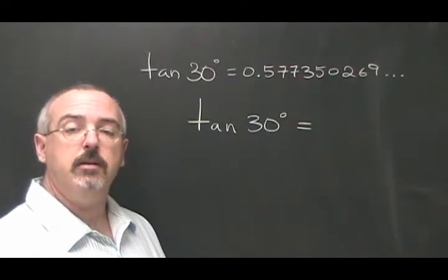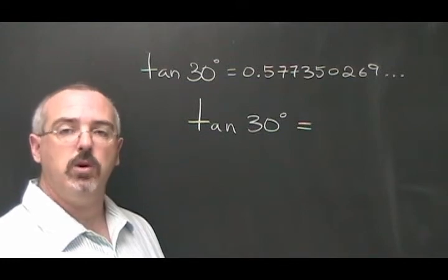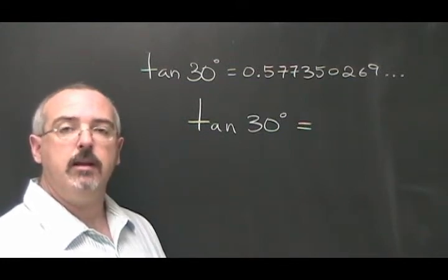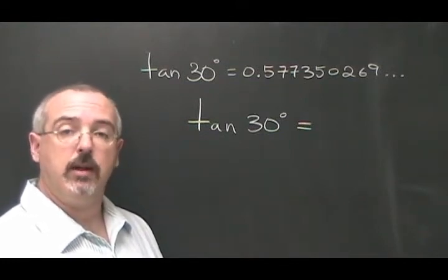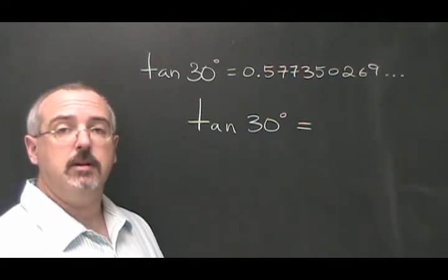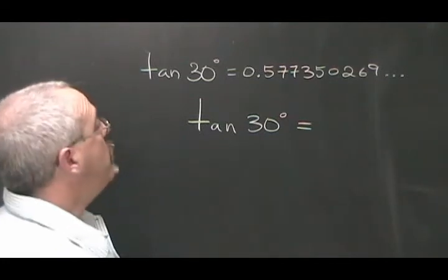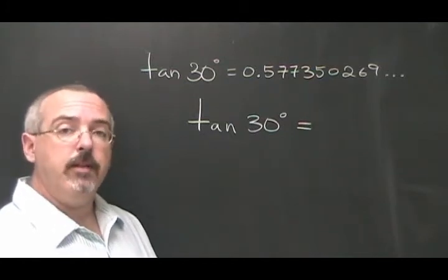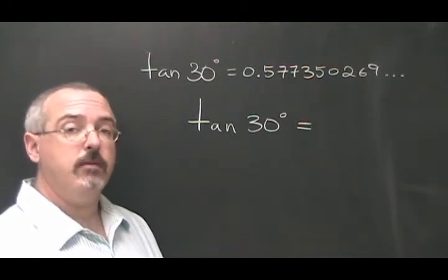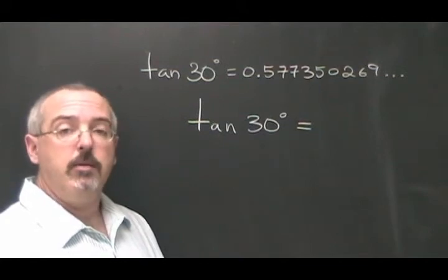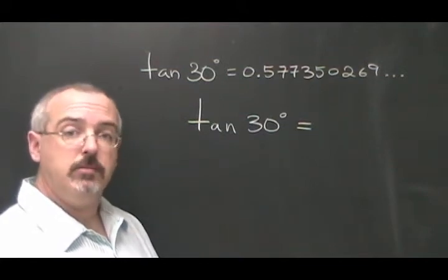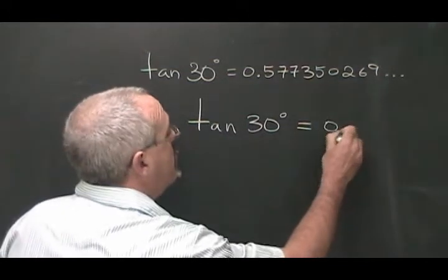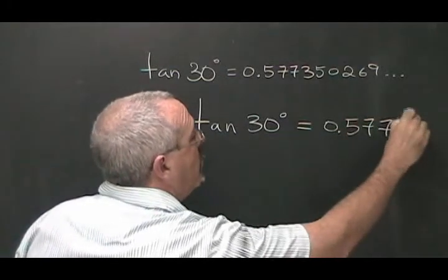In trigonometry we always round off to four decimal places. If we enter TAN of 30 degrees into our calculator, we get a long decimal that starts with 0.57735. Since the fifth number is a 5 and that's greater than 4, we will round the fourth number up by 1. So our answer will be 0.5774.